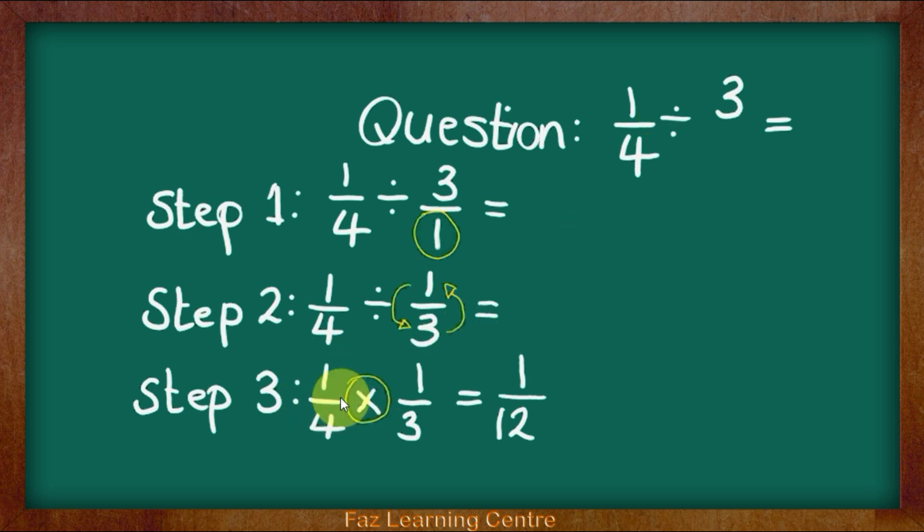So we have 1/4 times 1/3 equals 1/12. How did we get 1/12? We did 1 times 1 which is 1, 4 times 3 which is 12.